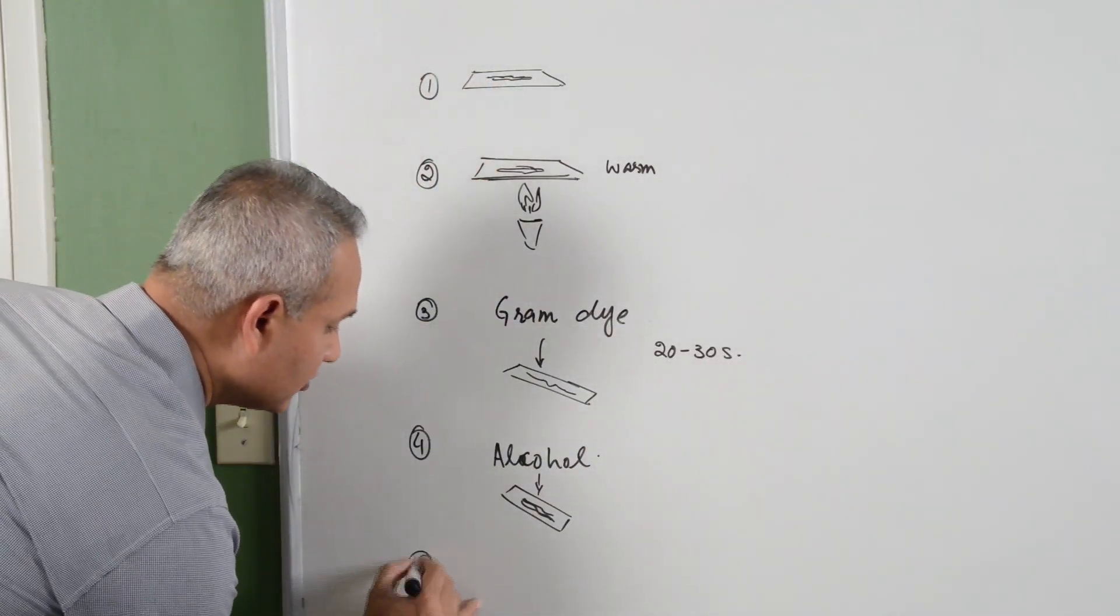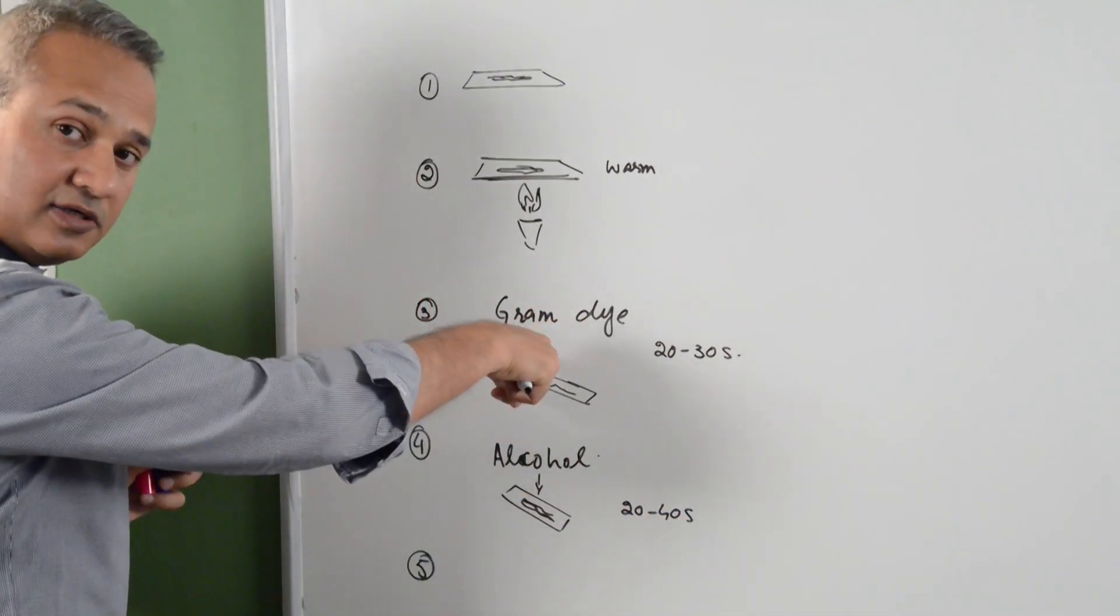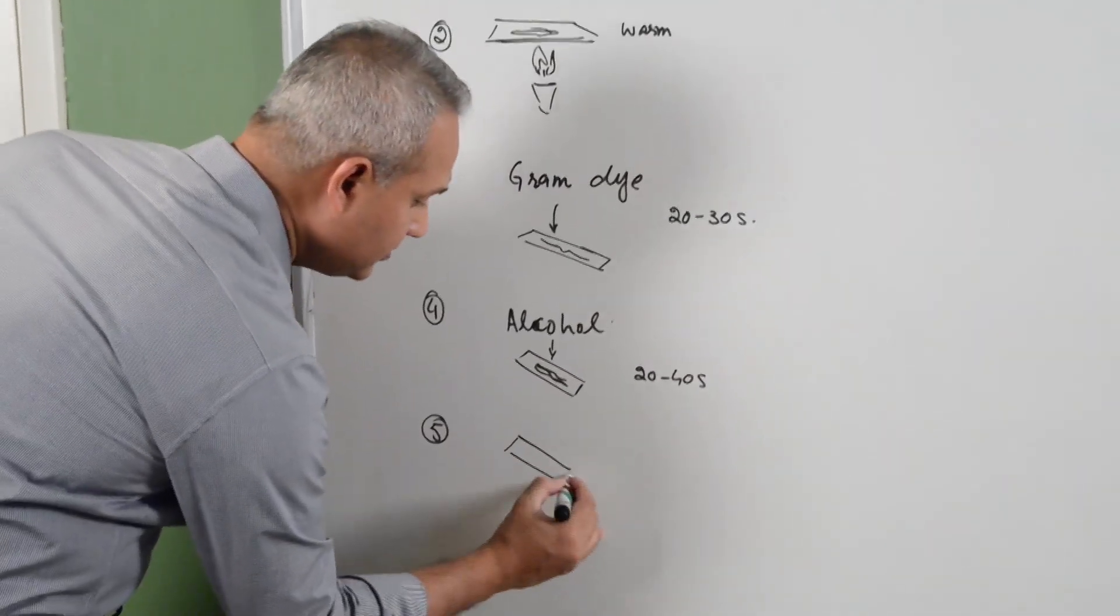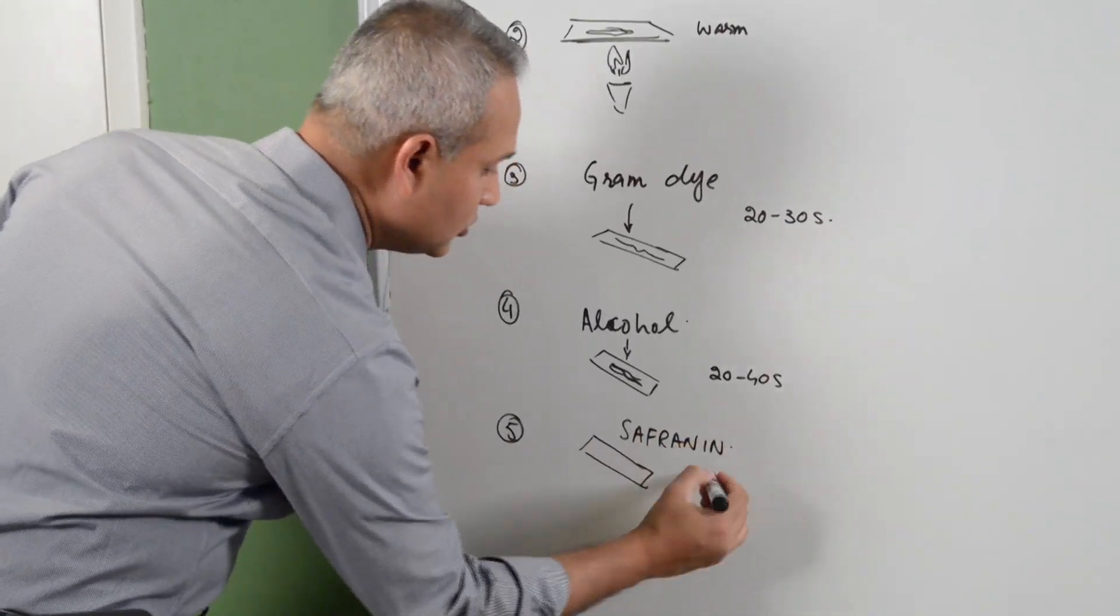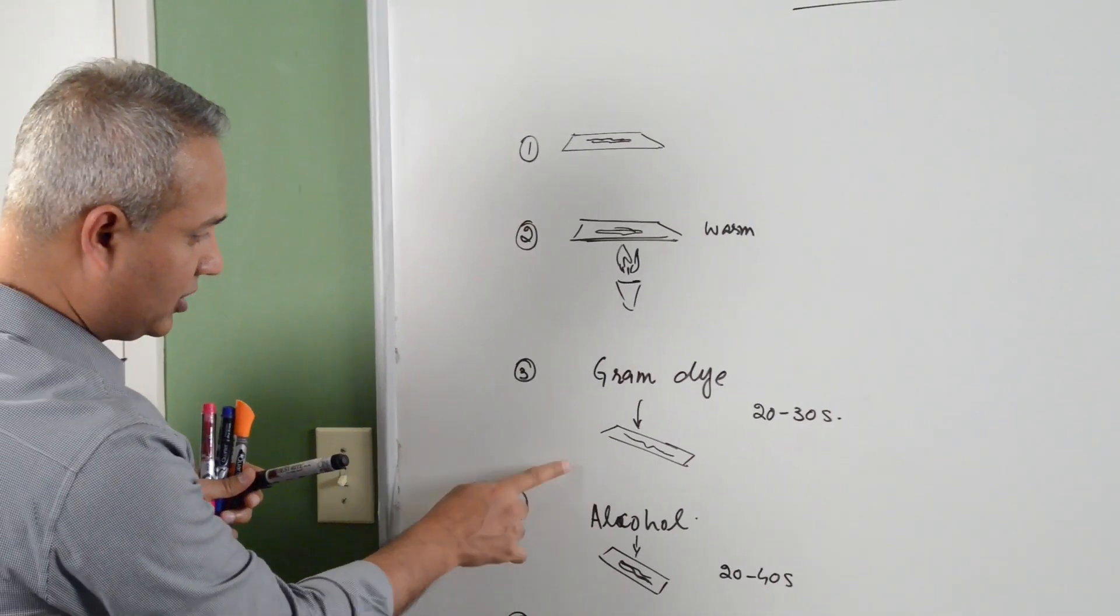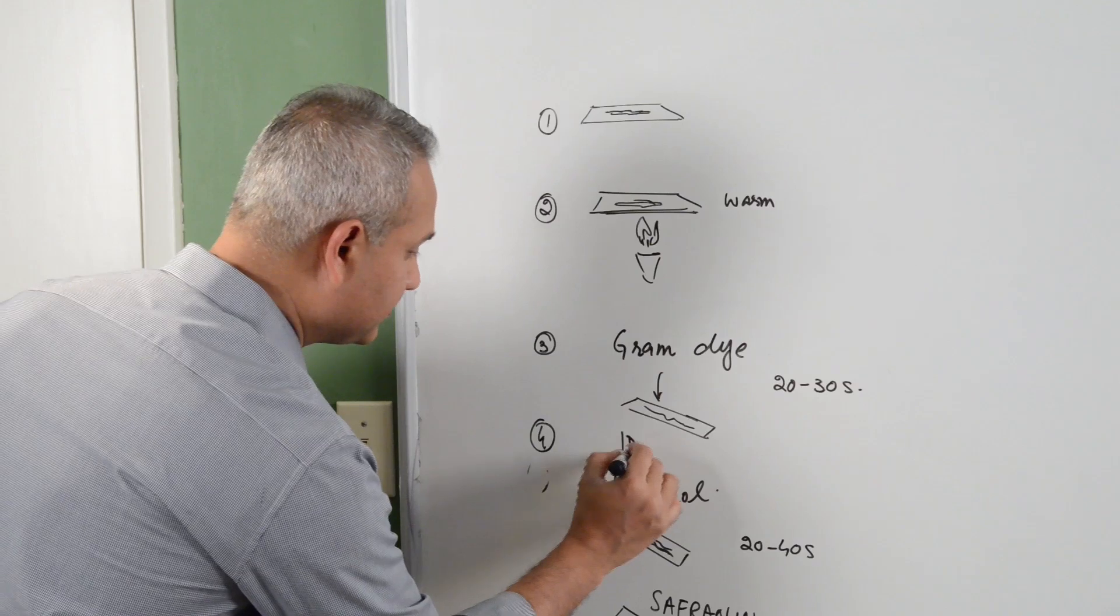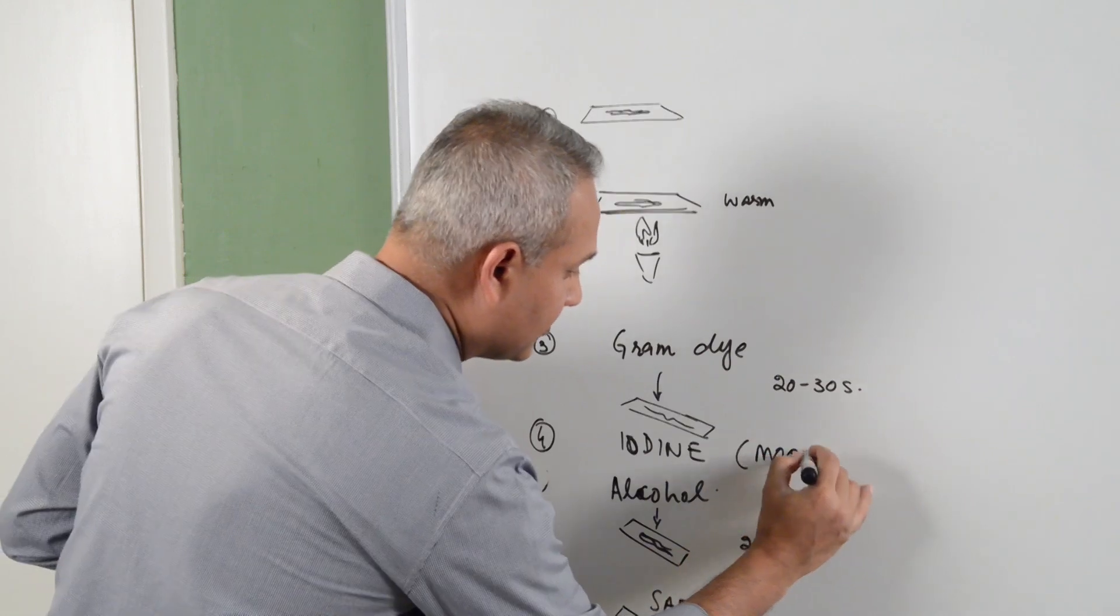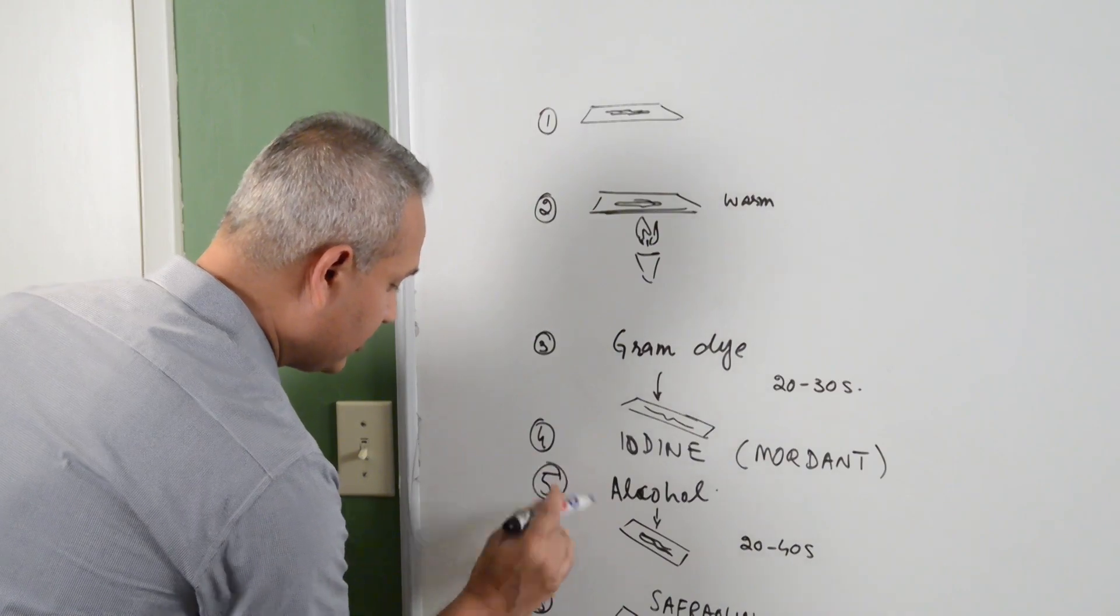And then you once again, so this 20 to 30 seconds, 20 to 40 seconds of alcohol drops you would pour on this. And finally you will put safranine, you will put safranine counterstain for another 20 to 40 seconds. One thing that I forgot here, after the Gram dye before the alcohol, you are going to put a mordant iodine. It is a mordant. What it does is it fixes the dye. So 4, 5 and 6.